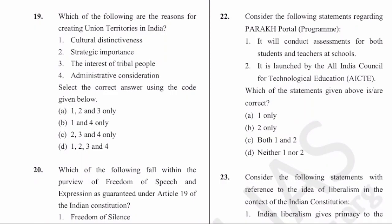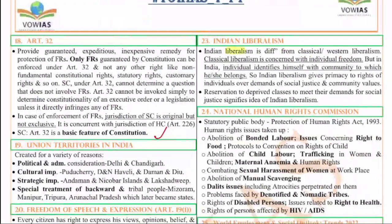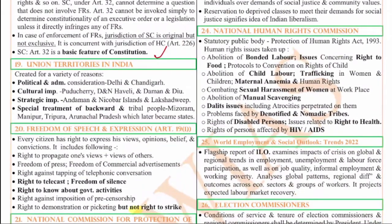The 19th question is on union territories. Union territories are created for a variety of reasons: a few are for political and administrative convenience like Delhi and Chandigarh; a few for cultural importance like Puducherry, Dadra and Nagar Haveli; a few for strategic importance like Andaman and Lakshadweep; and a few for special treatment of backward classes like Manipur and Mizoram.